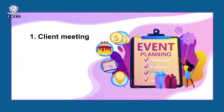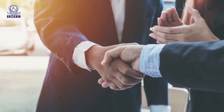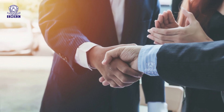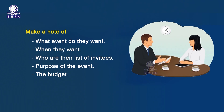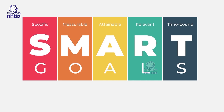Some basics of event planning: first is the client meeting. The first proposal from an event management company is to identify the client and meet to understand their requirements — make a note of what event they want, when they want it, who are their invitees, the purpose of the event and the budget. These initial details will help work out a road map for the proposed event. The mantra for a good event organizer is SMART — Specific, Measurable, Attainable, Relevant and Time-bound — which could be a great approach to a successful event.